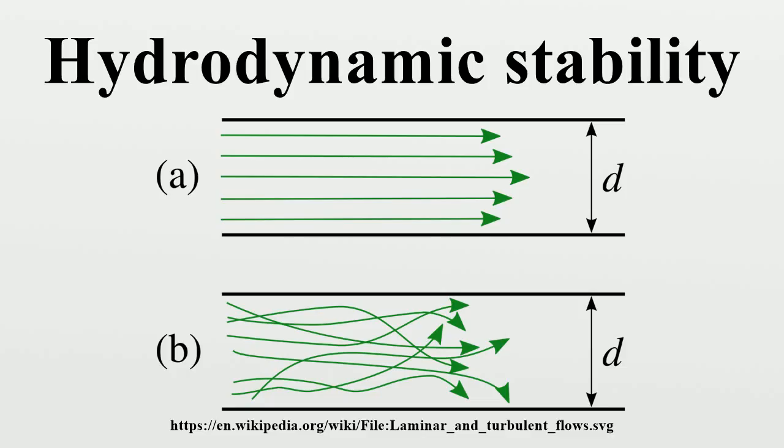The parameter that is being changed in the case of hydrodynamic stability is the Reynolds number. It can be shown that the occurrence of bifurcations falls in line with the occurrence of instabilities.